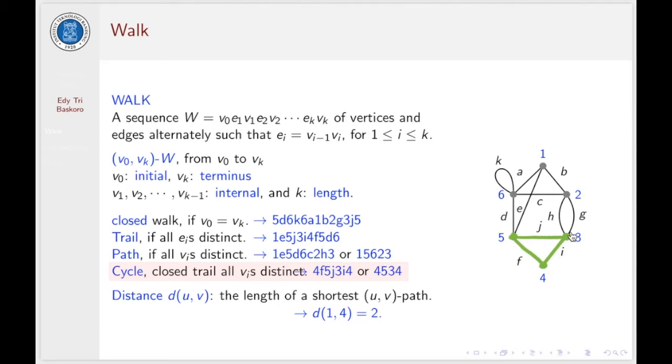Now I define a distance between one vertex to another in our graph, which is the length of a shortest walk from this vertex to the other vertex. The distance from U to V is the length of the shortest path from U to V. For example, the distance from 1 to 4 is 2, because we have shortest walk here of length 2.